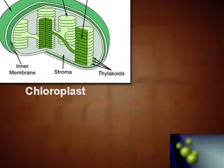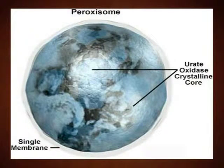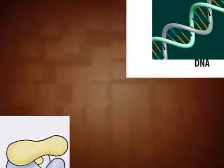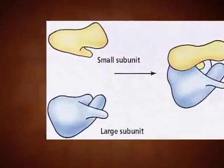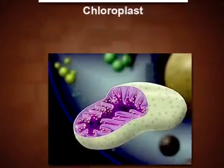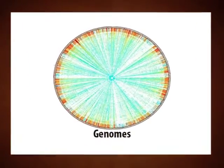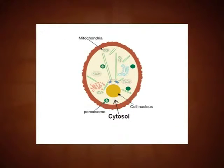Peroxisomes differ from mitochondria and chloroplasts in having a single membrane and they do not contain DNA or ribosomes. Since peroxisomes differ from chloroplasts and mitochondria in not having their own genome and protein synthesis machinery, all their proteins must be imported by a process of selective import from the cytosol, although they are capable of self-replicating like endoplasmic reticulum.